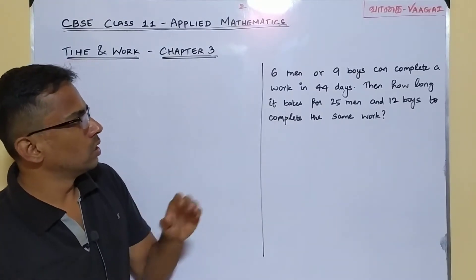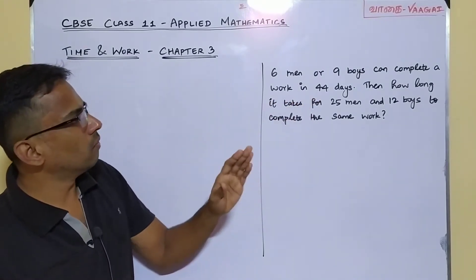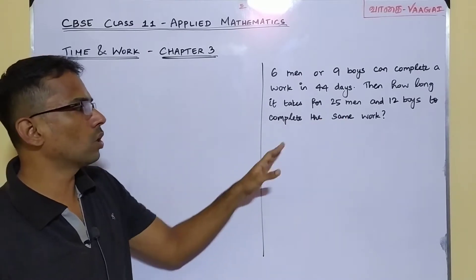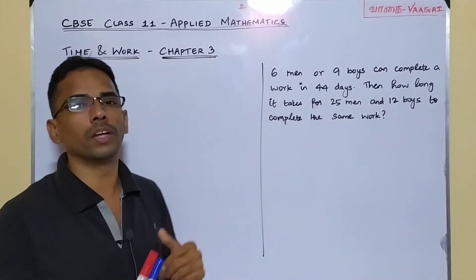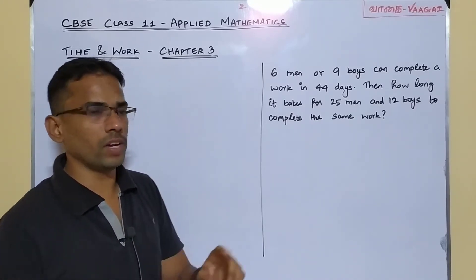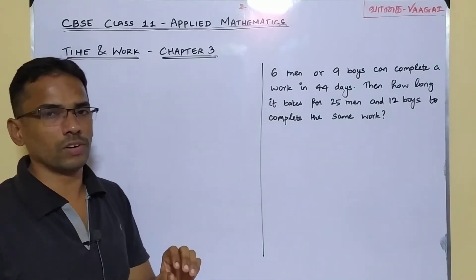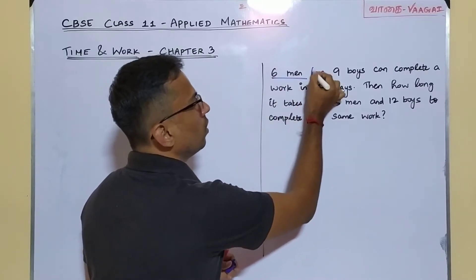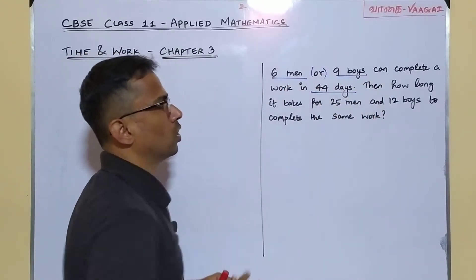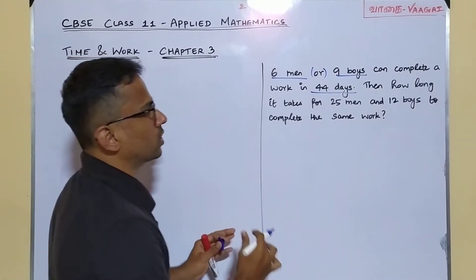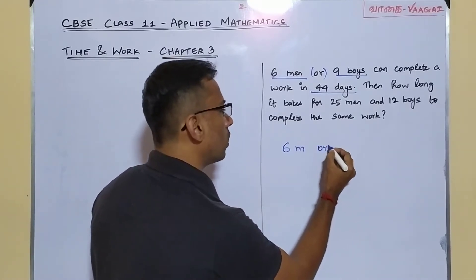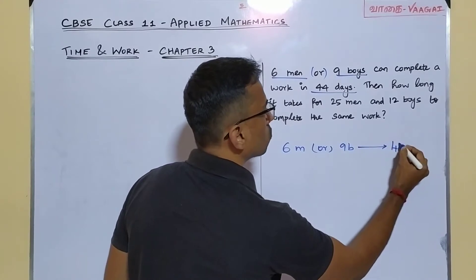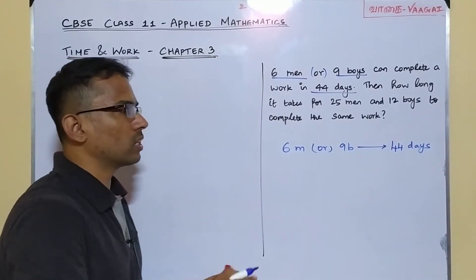Let's directly get into the question: "Six men or nine boys can complete a work in 44 days. Then how long will it take for 25 men and 12 boys to complete the same work?" Let's take down what is given to us. First, it is given that six men or nine boys — be careful with this word 'or' — six men or nine boys can complete a work in 44 days.